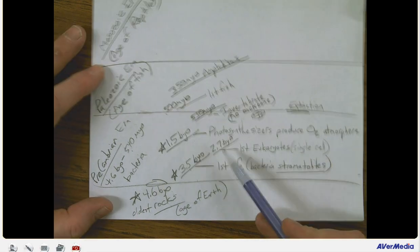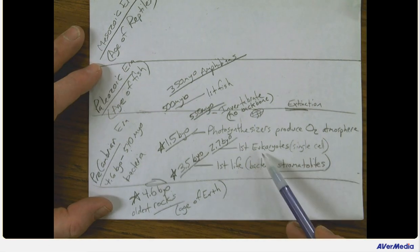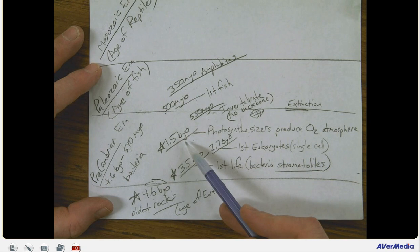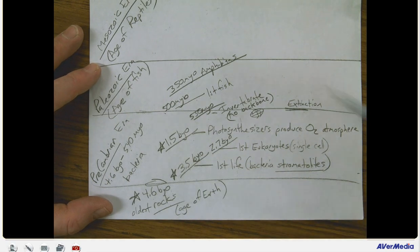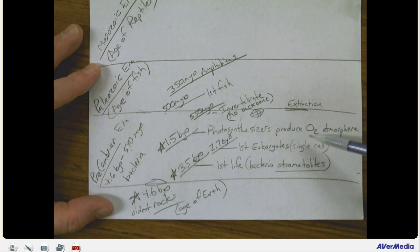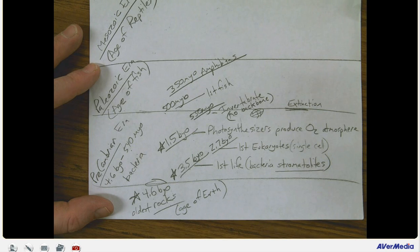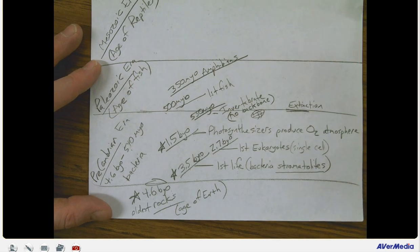At 2.7 billion years ago, we had the first eukaryotes. That was in the previous class. 1.5 billion years ago, we have photosynthesizers producing oxygen in the atmosphere. Before 1.5 to 1.7 billion years ago, the atmosphere was mainly carbon dioxide and other gases. The photosynthesizers, the living things on this planet, has changed the atmosphere over time to have more oxygen. If you were to take a time machine back before 1.5 billion years, if you didn't bring an oxygen supply, you'd suffocate in that atmosphere.